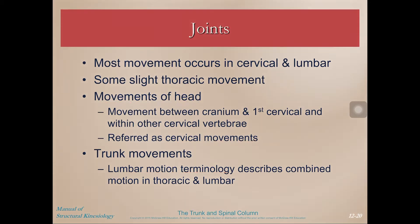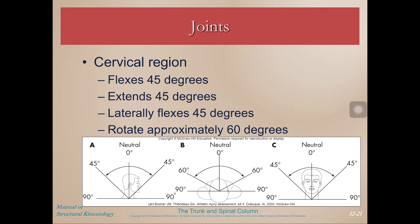We also often use lumbar motion terminology when describing movement of both the thoracic and lumbar regions, grouping them together since they're all articulated together. In the cervical region, on average we have about 45 degrees of flexion and extension — flexion is your chin touching your chest, extension is moving back to anatomical position and looking up to the sky. We can also laterally flex 45 degrees to each side, bringing your ear to your shoulder, and rotate approximately 60 degrees.